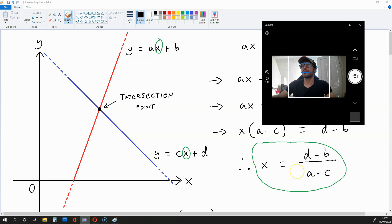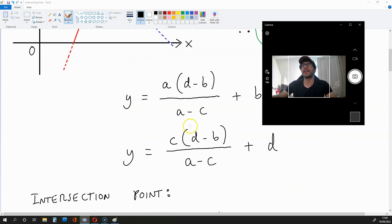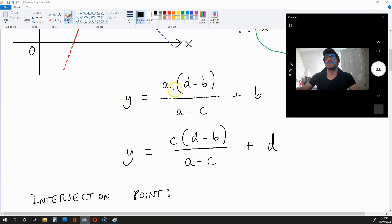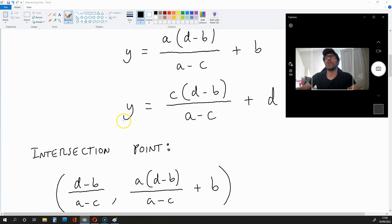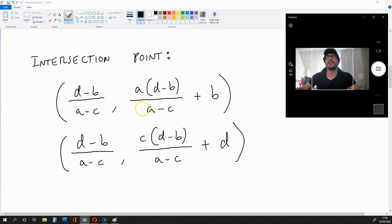Okay, so what types of formulas do we get when we plug this value of X into this equation or this equation? Well, what we get is Y is equal to A times D minus B over A minus C plus B. And Y is also equal to C times D minus B over A minus C plus D. So the intersection point can either be this or this.